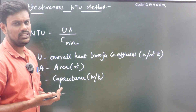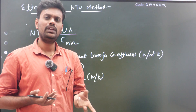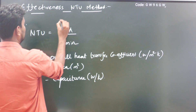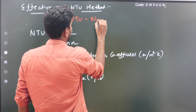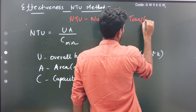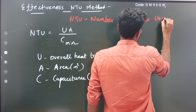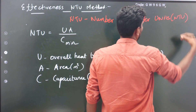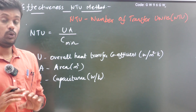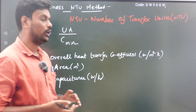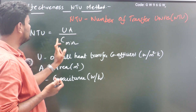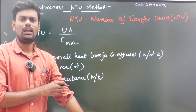Next is the NTU method. NTU stands for Number of Transfer Units. The effectiveness of the heat exchanger can be found either by the LMTD method or the NTU method. The formula for NTU is: NTU equals UA divided by C minimum.